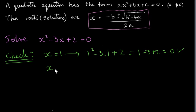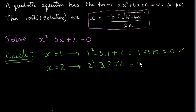Let's check the other solution, x equals 2. We plug 2 in for x: 2 squared minus 3 times 2 plus 2. So 2 squared is 4, minus 3 times 2 is minus 6, plus 2. So we have 4 minus 6 is minus 2, and minus 2 plus 2 is 0. So both solutions check out.